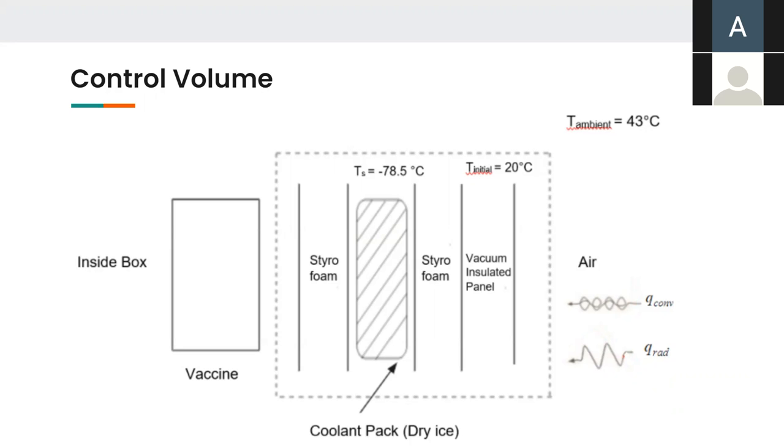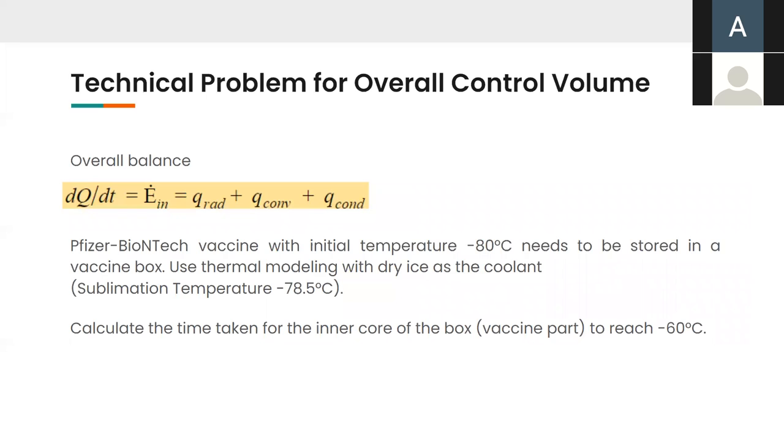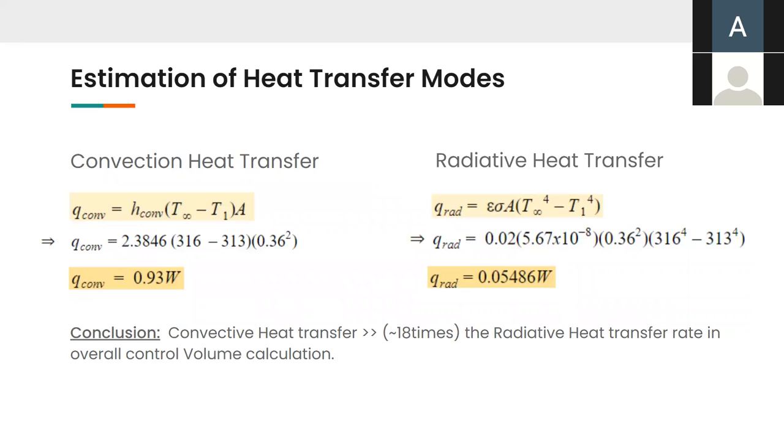And now we move towards the technical problem for our overall control volume calculation and estimation. So, we use the following overall heat balance equation, which tells us that the overall change in heat transfer is equal to heat transfer due to radiation plus convection and conduction. The problem that we have in hand is we take Pfizer BioNTech vaccine at minus 80 degree Celsius, which is the lowermost optimum temperature of the vaccine. And we are calculating the time taken for the inner core to go outside the optimum temperature range that is above minus 60 degree Celsius.